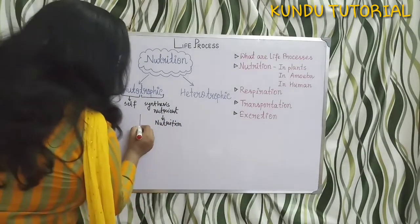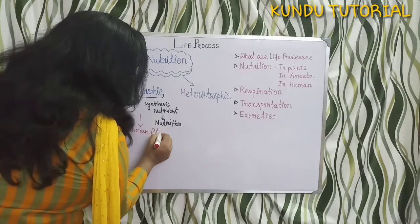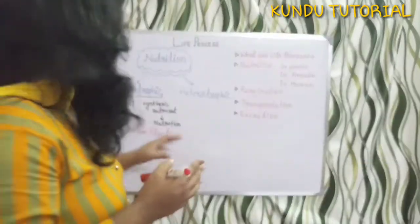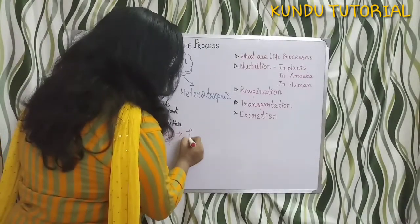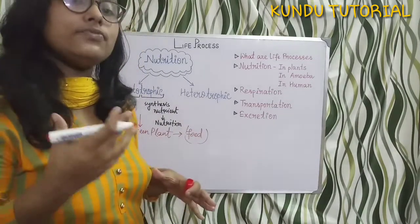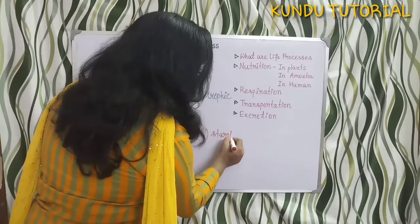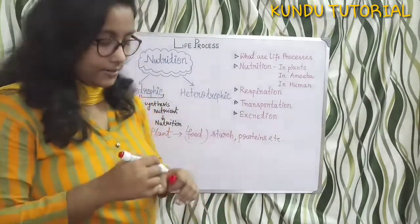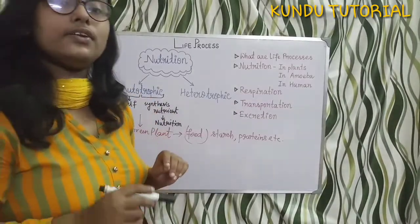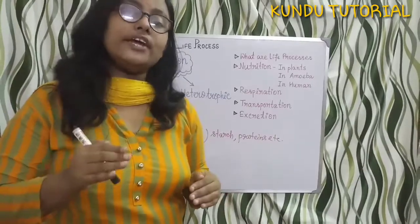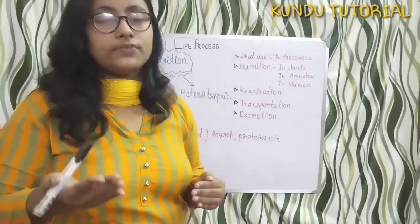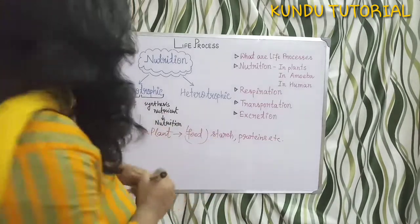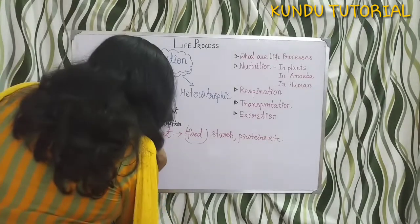This is known as autotrophic nutrition, shown by green plants only. Green plants, present in our environment, can produce sufficient food materials like starch and proteins inside their own body. That is why it is called autotrophic nutrition. Plants need this nutrition to survive in nature, and this is completed through the photosynthesis process.